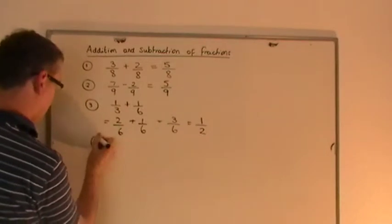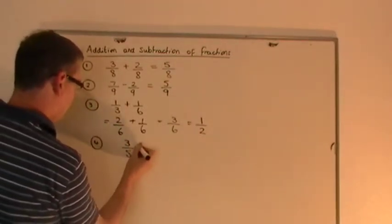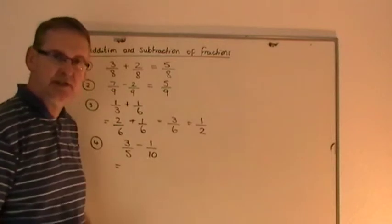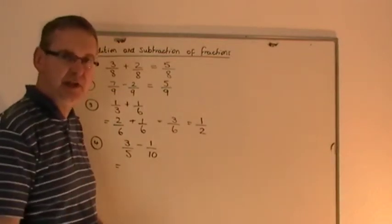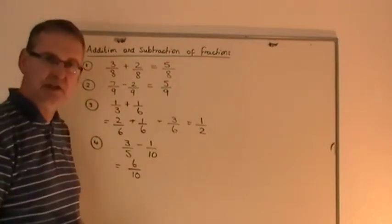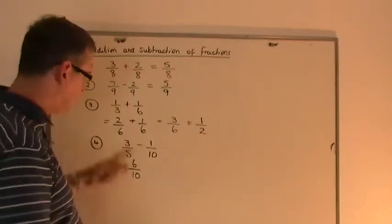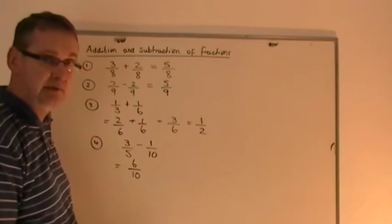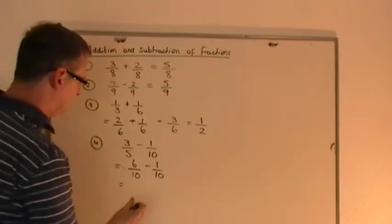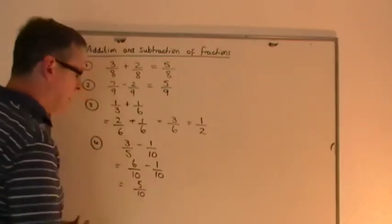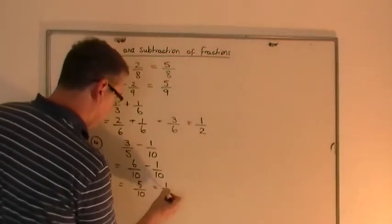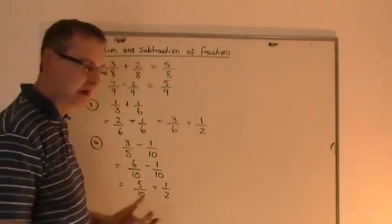So if I do number 4 like this, you might have 3 fifths take away 1 tenth. You can't take these away as they stand because they're different types of fraction. So you make them both into the same type of fraction. I can do this simply by doubling the 3 fifths top and bottom to get 6 over 10. Double the top, double the bottom. 6 tenths is the same thing as 3 fifths. They mean the same thing. They look different but they're the same thing. You leave the other one alone because it's already over 10. So 6 tenths take away 1 tenth. That's nice and easy. It's just 5 tenths. 5 tenths is the answer. Be careful that it cancels. So you should share that by 5 and share that by 5. You get the answer a half. That's the answer to that.